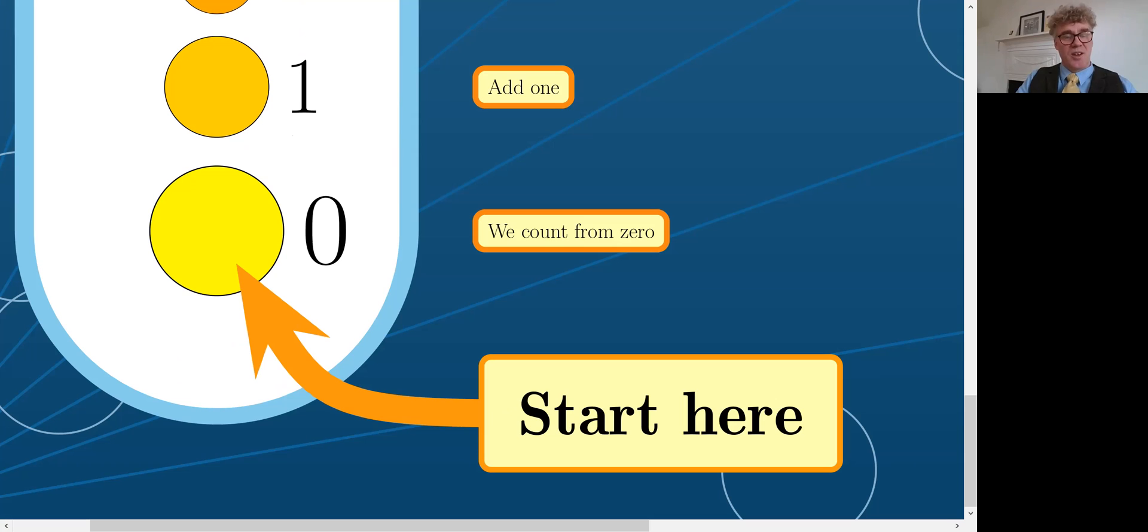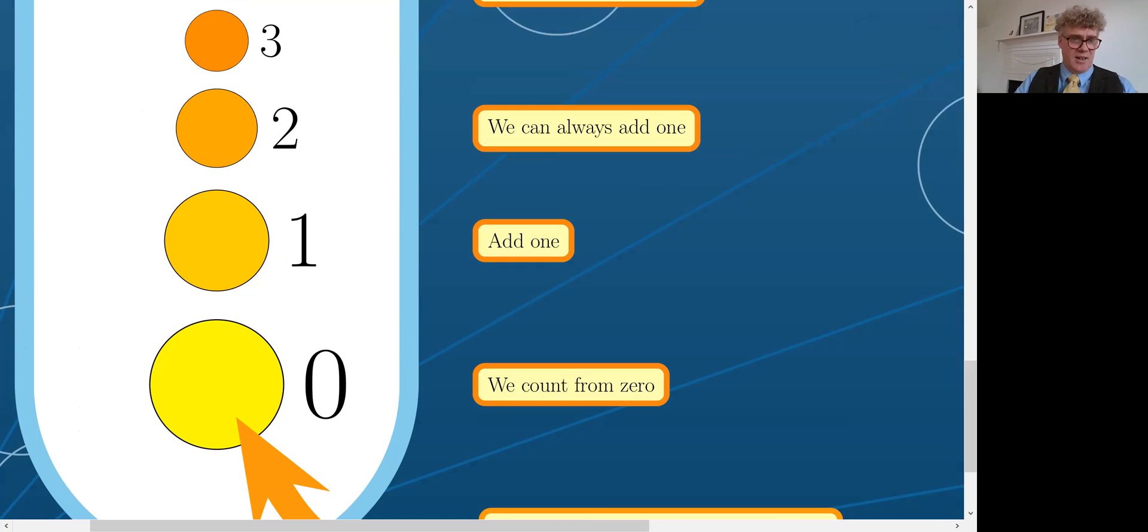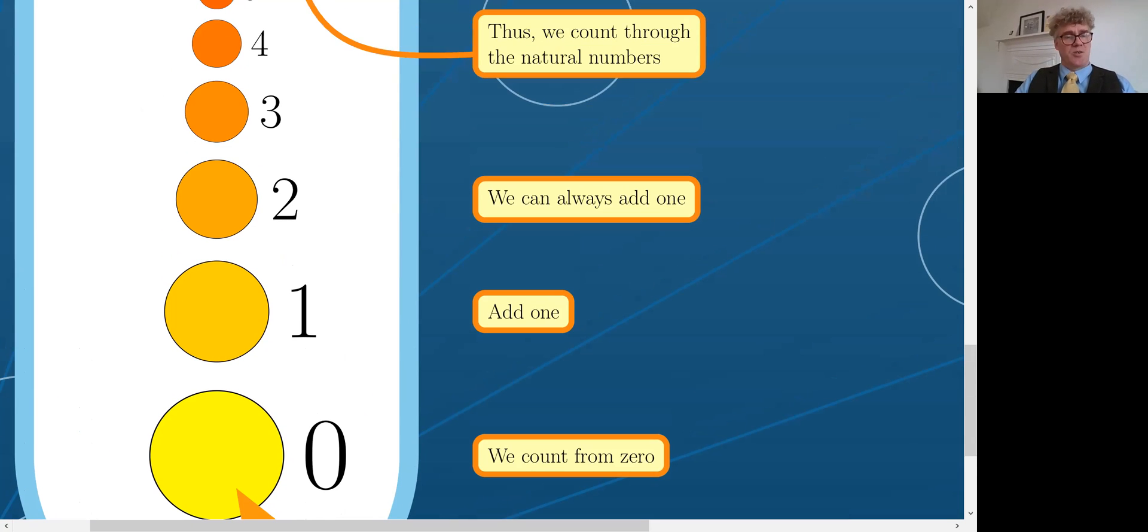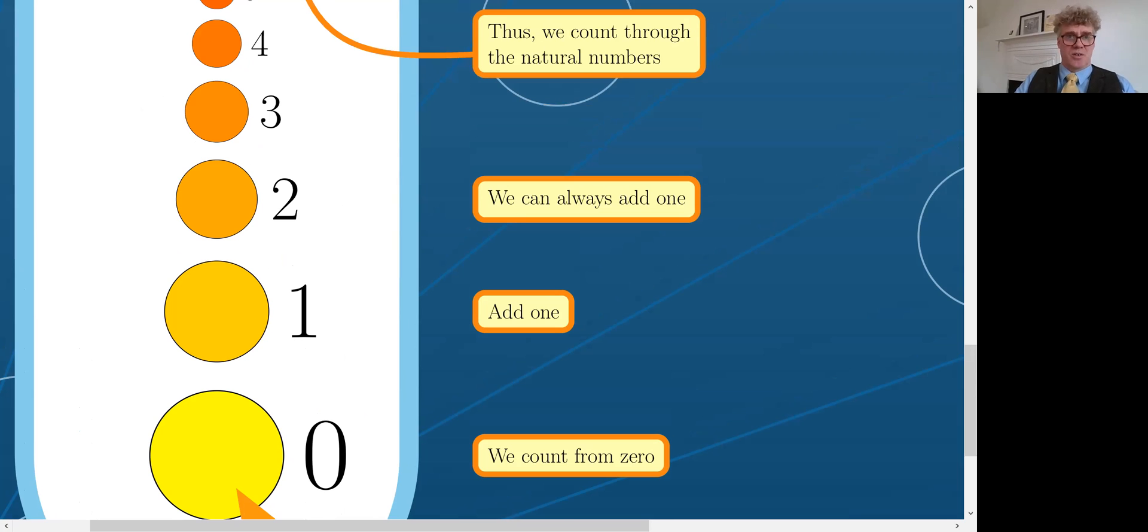We start counting in the ordinals with the number zero, the smallest ordinal, and then of course we can add one and make the ordinal number one. But of course we can always add one so we can make the number two and three and four and so on and in that way count through the natural numbers, the finite ordinal numbers.